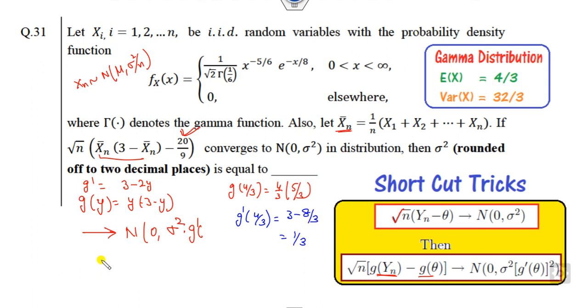So you can substitute here. Sigma is 32 by 3 because this is the variance. Multiply 1 by 3 by 3, so the answer is 32 upon 9, 9 into 3 is 27. So the right answer is 32 divided by 27.